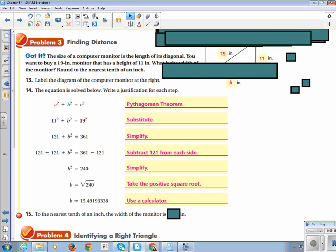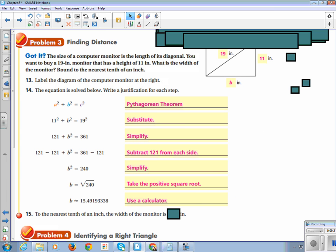Then, we use a calculator to get 15.49. It asks us to round to the nearest tenth of an inch. Please be careful that you're rounding it correctly. Tenth is the one right next to the decimal point. So, it's 15.5.